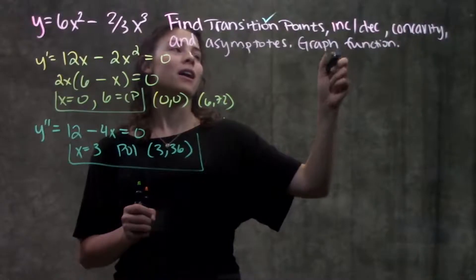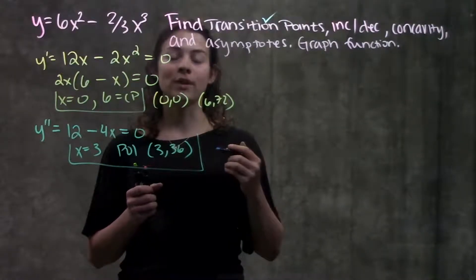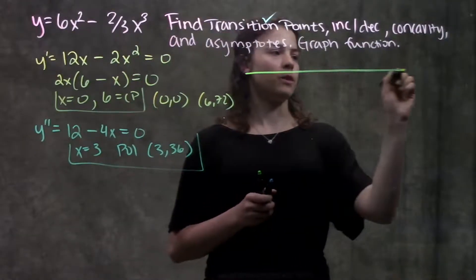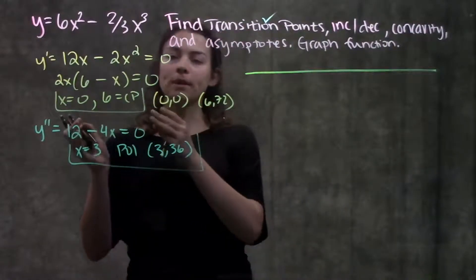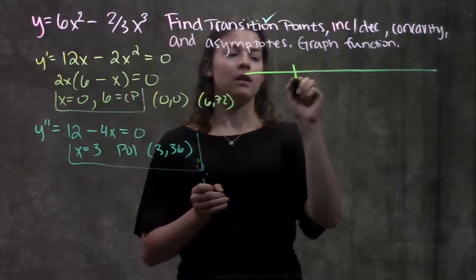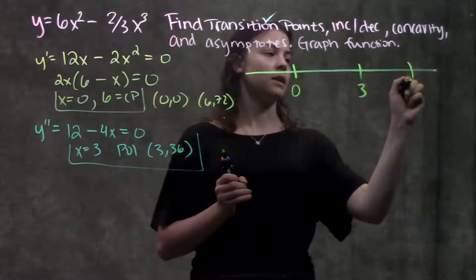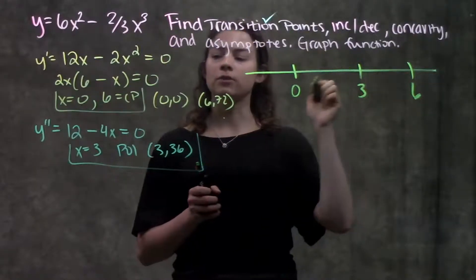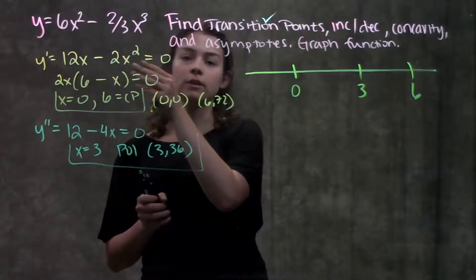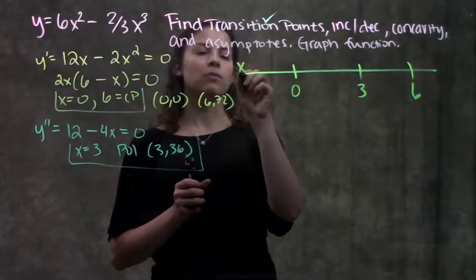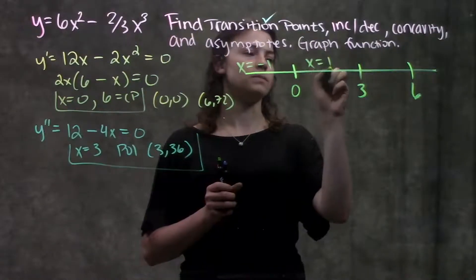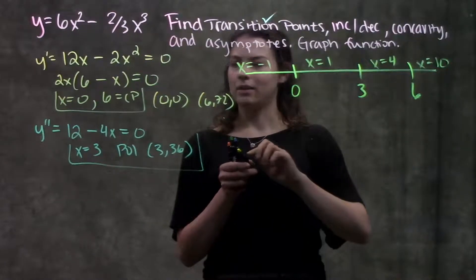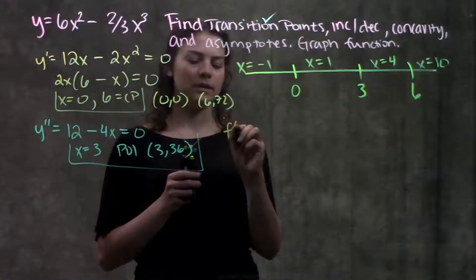Next, they're asking for the intervals of increasing and decreasing and the interval of concavity. I'm going to make one number line with both my critical points and my points of inflection on it — so I have 0, 3, and 6. I'm going to plug in test values from each interval into both my first derivative and my second derivative. So let's try x equals negative 1, x equals positive 1, x equals 4, and x equals 10.